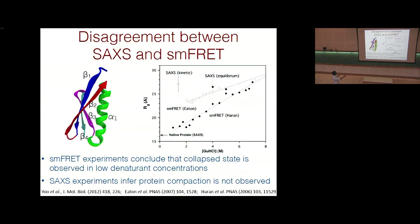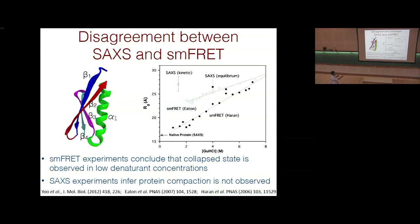There are two sets of FRET experiments: one from the Gilmore-Haran group at Weizmann and one from Eaton's group at NIH. The first shows a 12-angstrom compaction in protein dimensions during the burst phase as denaturant is diluted, while the other shows only 6 angstroms. Although these experiments were done on the same protein with the same dyes, the reason for the discrepancy is not clear. FRET experiments conclude there is compaction, but SAXS data in solid squares shows essentially no compaction in protein dimensions.